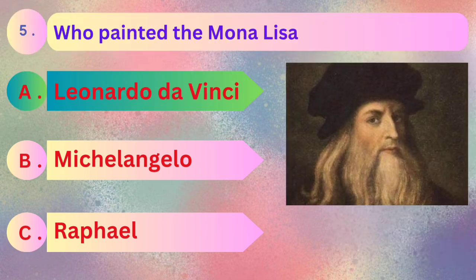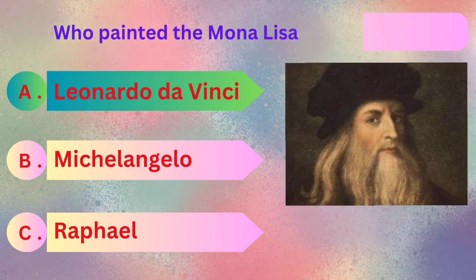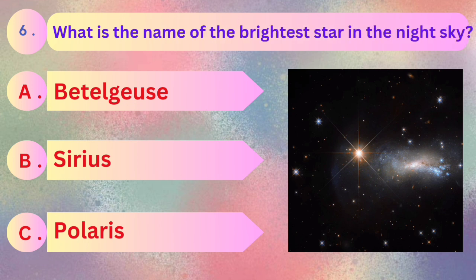Answer is Leonardo da Vinci. And next question: what is the name of the brightest star in the night sky? Options: Betelgeuse, Sirius, and Polaris.